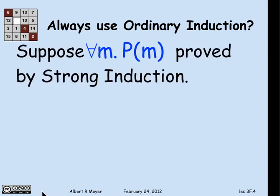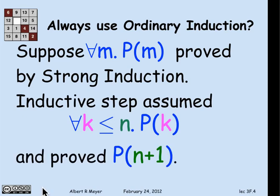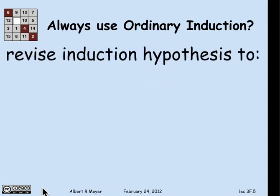It's easy. Suppose that you've proved for all m, P(m), using strong induction with induction hypothesis P(m). Well, it's the same base case whether you're using ordinary or strong. But in strong, you would do an inductive step where you actually assumed not just P(n), but P(k) for all k less than or equal to n, and then using all those hypotheses about P(k), you proved P(n+1) in the strong induction. How do you turn it into an ordinary induction? Just let Q(n) be that assumption that for all k less than or equal to n, P(k).